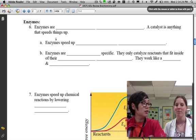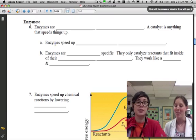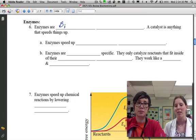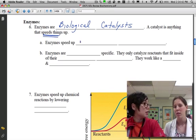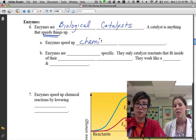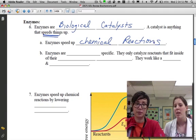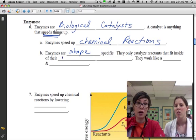All right our last section for biochemistry are enzymes. So enzymes are biological catalysts and a catalyst is just anything that speeds up stuff and that's really important. So I'm going to underline that. And enzymes speed up something in particular. They speed up chemical reactions. So everything you're doing right now thinking, breathing, writing involves chemical reactions. And so enzymes are helping to make that happen. But enzymes just don't speed up everything. They only can speed things up if they're the right shape. So enzymes are shape specific. So they only catalyze reactants that fit inside of their active site.